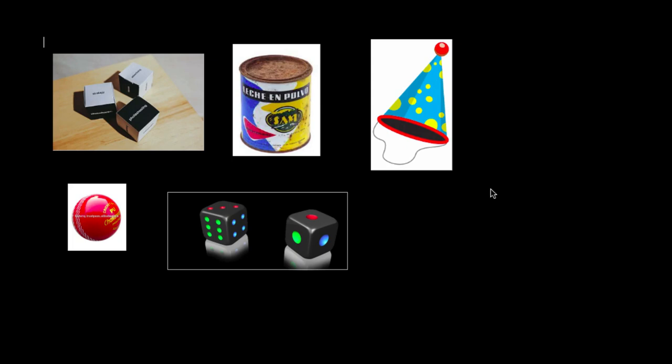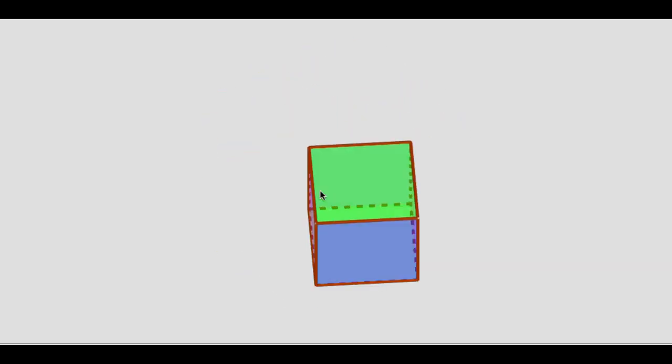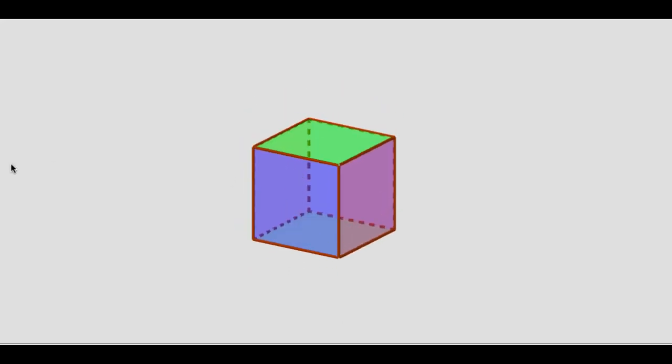Let us learn this by considering a solid that resembles a dice. You may observe that this solid has six faces which are all congruent squares. This is called a cube.